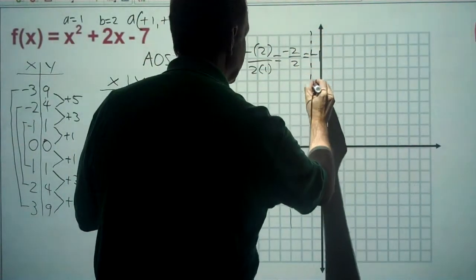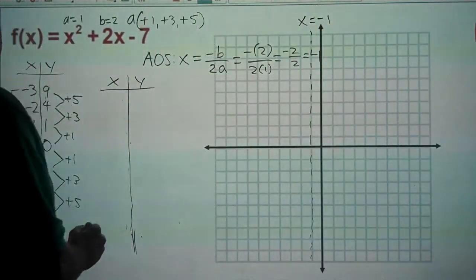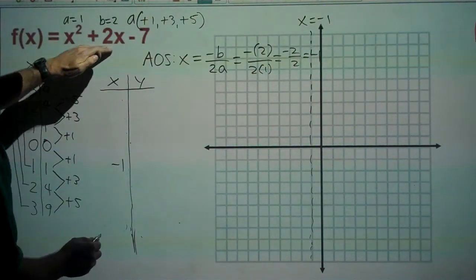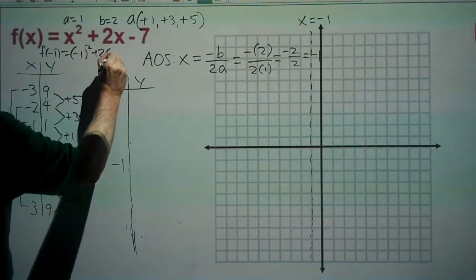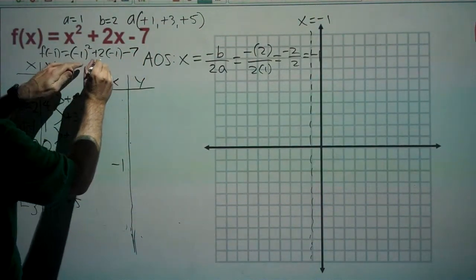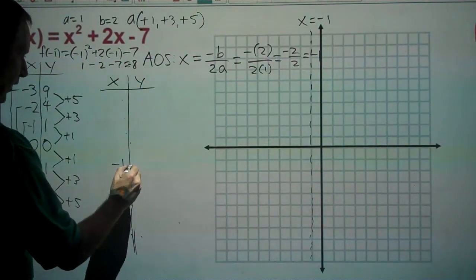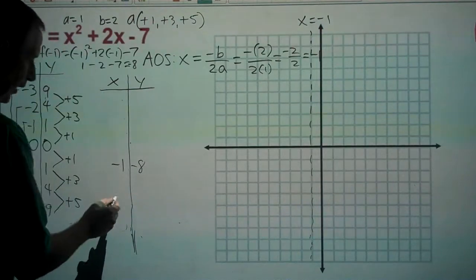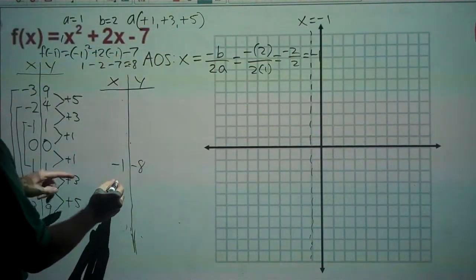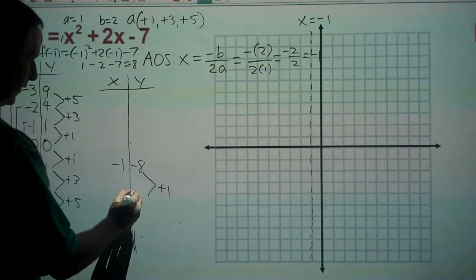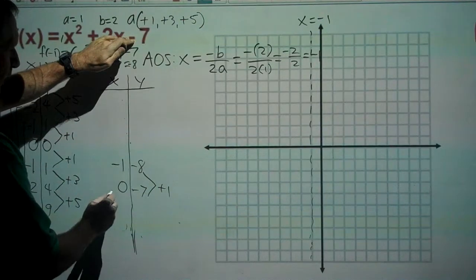So x equals negative one is our axis of symmetry. We plug negative one into the function: f(−1) = (−1)² + 2(−1) − 7 = 1 − 2 − 7 = negative eight. Our vertex is at (−1, −8). With a equal to one, the step pattern stays plus one, plus three, plus five. Adding one: negative eight plus one is negative seven, so input zero gives output negative seven — which is our y-intercept.